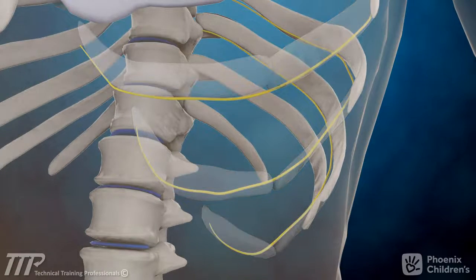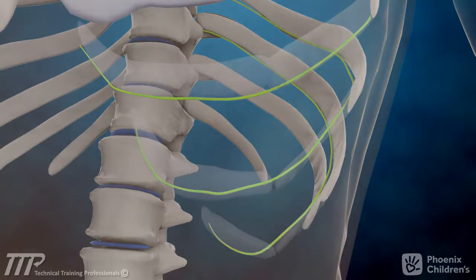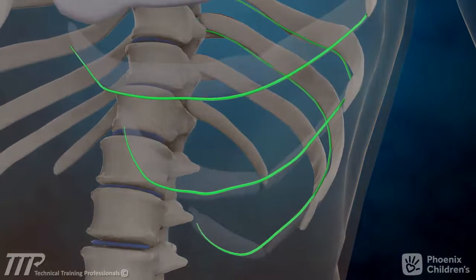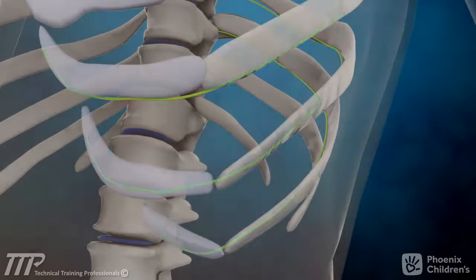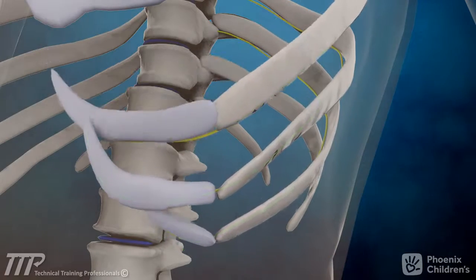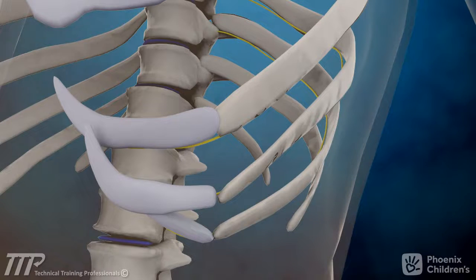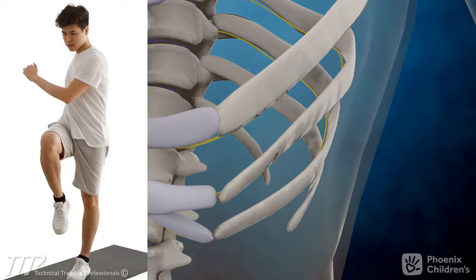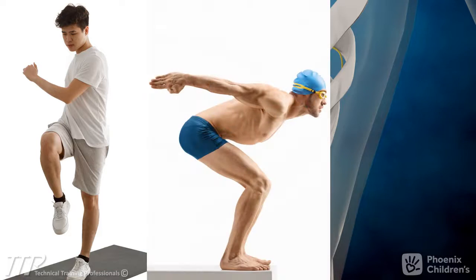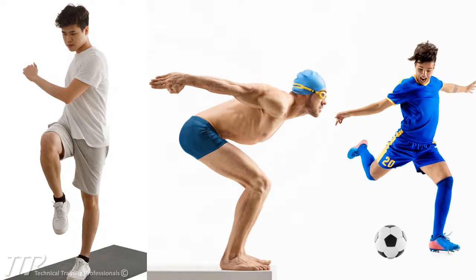Under each rib and cartilage, there is an intercostal nerve that can be irritated by compression or contact from the slipping rib below. This can be caused by certain repetitive movements, such as those seen during rotation, bending, and playing sports.